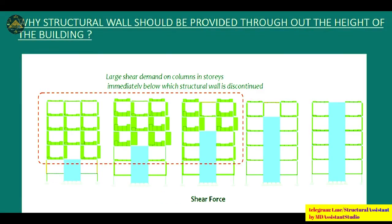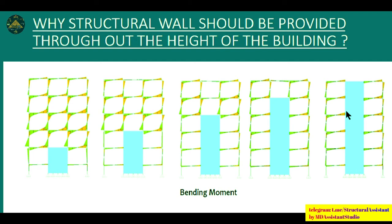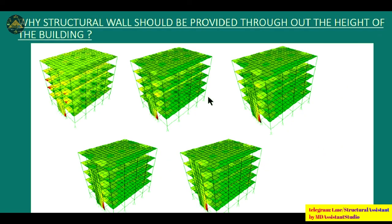Structural walls should be provided throughout the full height of the building. When walls are provided only up to certain stories, shear force distribution becomes very high. But when structural walls are provided throughout the height, force distribution becomes uniform and forces are significantly reduced. Bending moment forces in both walls and columns are also drastically reduced. FEM analysis confirms that high-stress red areas are greatly diminished when structural walls extend through the full building height, resulting in well-distributed forces.